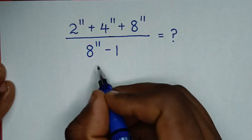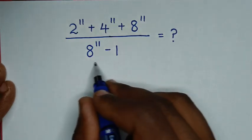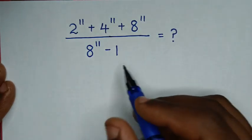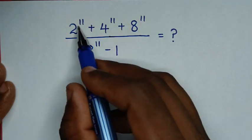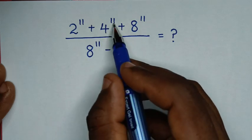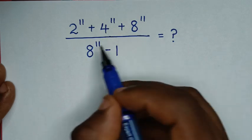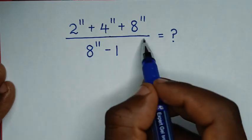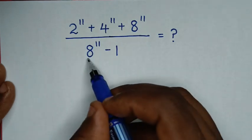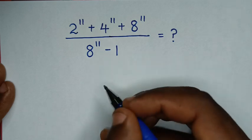Hello, you are welcome to solve this math problem, which is 2 power 11 plus 4 power 11 plus 8 power 11, over 8 power 11 minus 1.